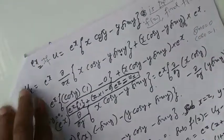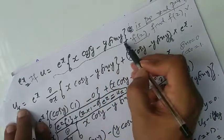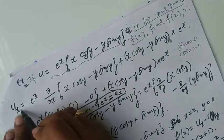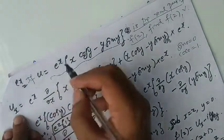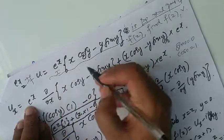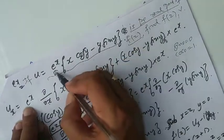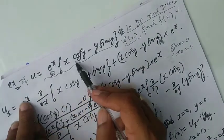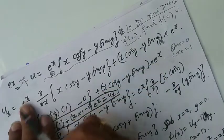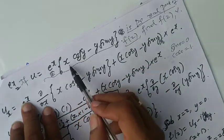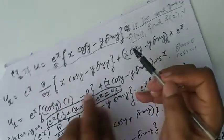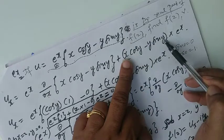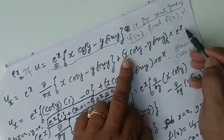Now let us take u. u is equal to e to the power x into x cos y minus y sin y. For ux, we are partially differentiating with respect to x. e to the power x is the first function, and x cos y minus y sin y becomes the second function — uv rule. So: first function e to the power x times the derivative of the second part with respect to x, plus second function x cos y minus y sin y times the derivative of e to the power x.